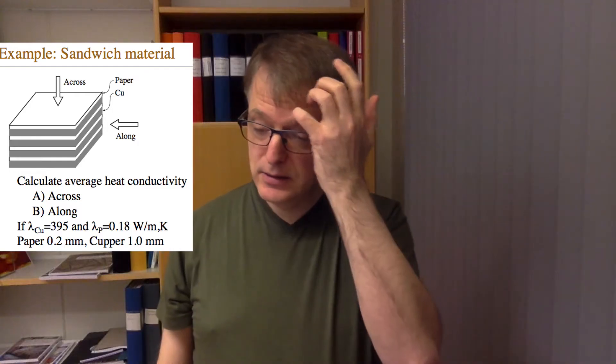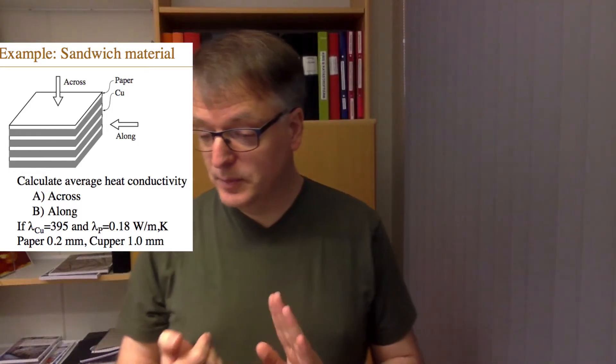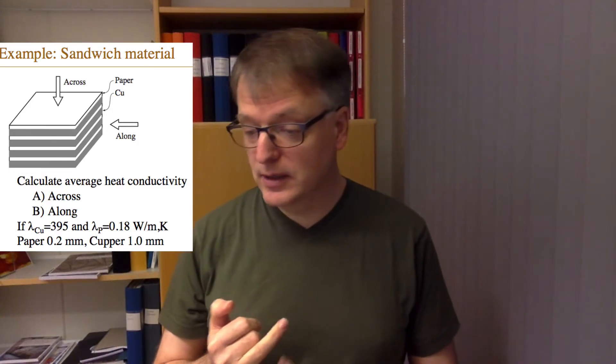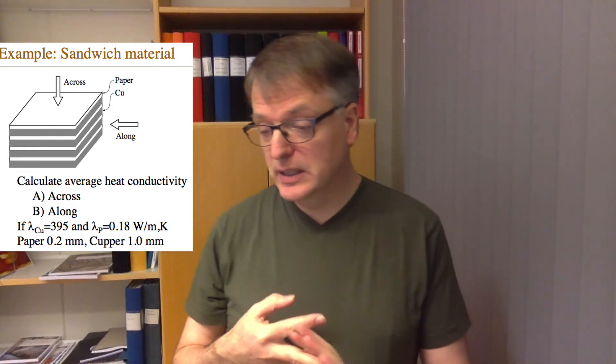We're going to calculate this average in both directions, across and along these layers. The paper is 0.2 mm thick, the copper is 1 mm thick. Heat conductivity is 395 for copper and 0.18 watts per meter kelvin for paper.